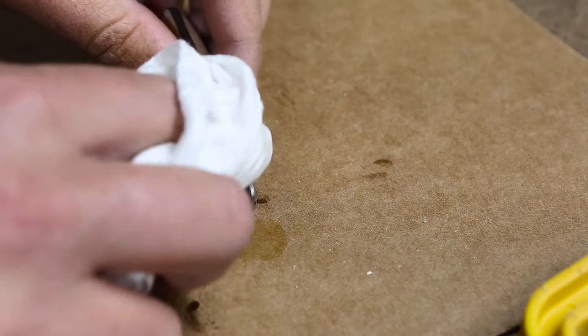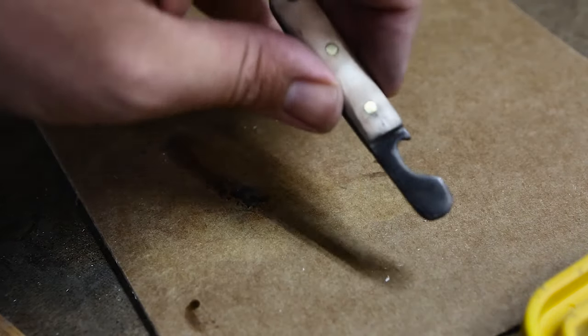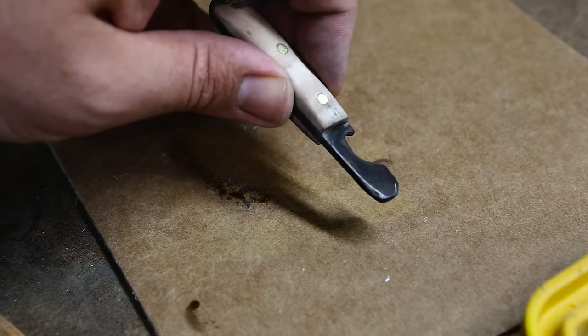Since I was going to be iron buffing the maple, I thought it would look nice if I blackened the steel too, so I rubbed the steel with some chemical blackener.